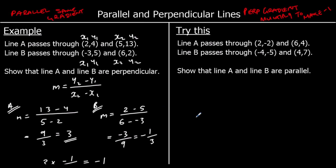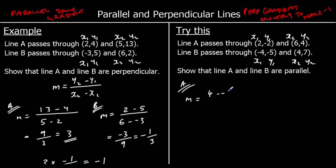One for you to try: show that line A and line B are parallel. We work out the gradient of both lines using the change in y over the change in x. For line A: y2 minus y1 is 4 minus minus 2, over x2 minus x1 is 6 minus 2. So 4 plus 2 is 6, 6 minus 2 is 4 — giving 6 over 4, or 3 over 2.